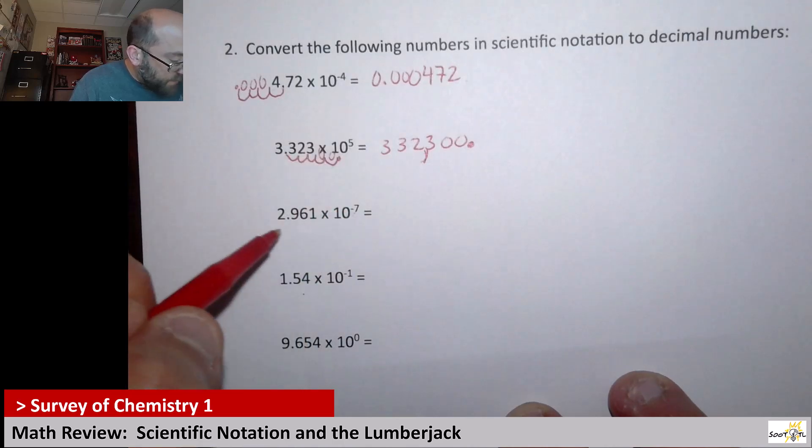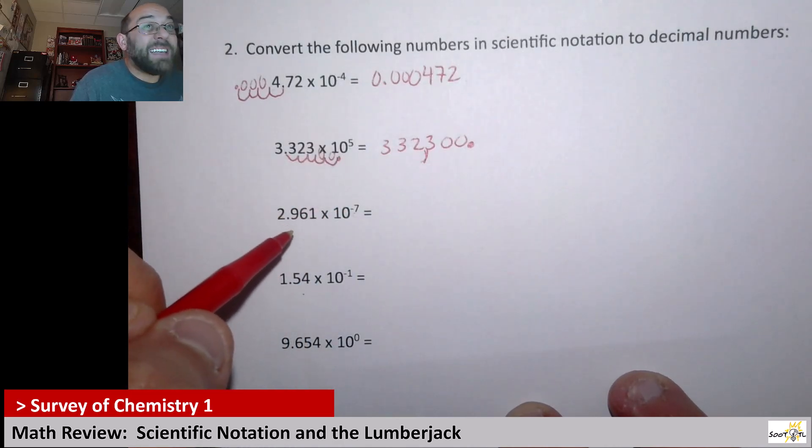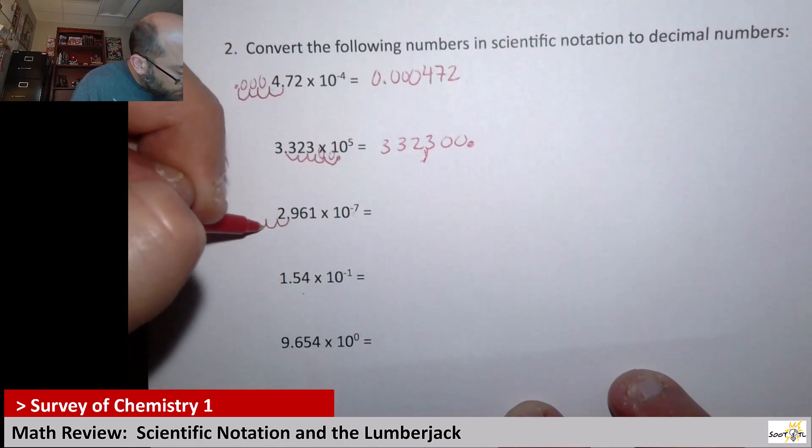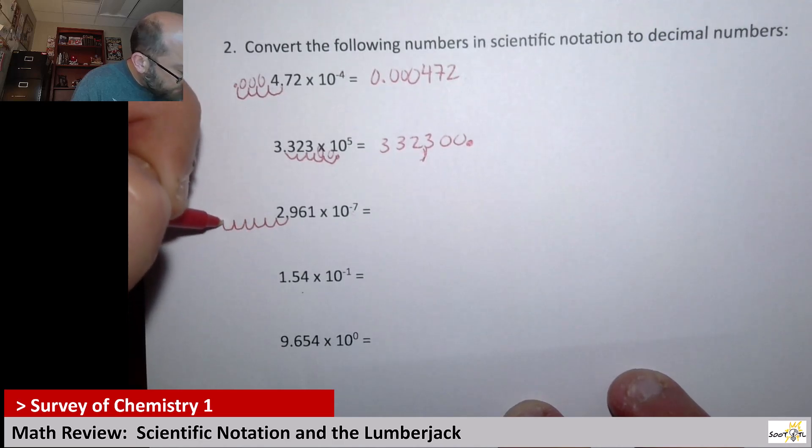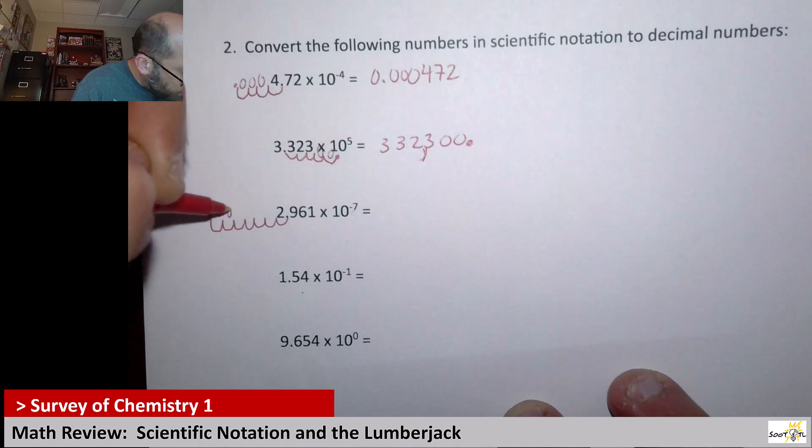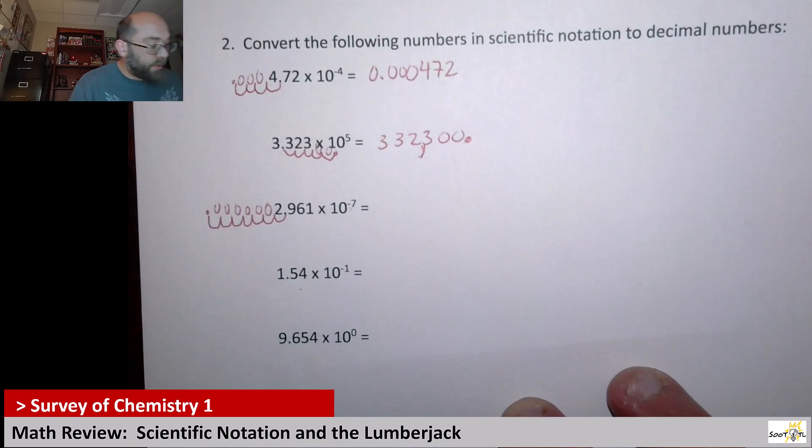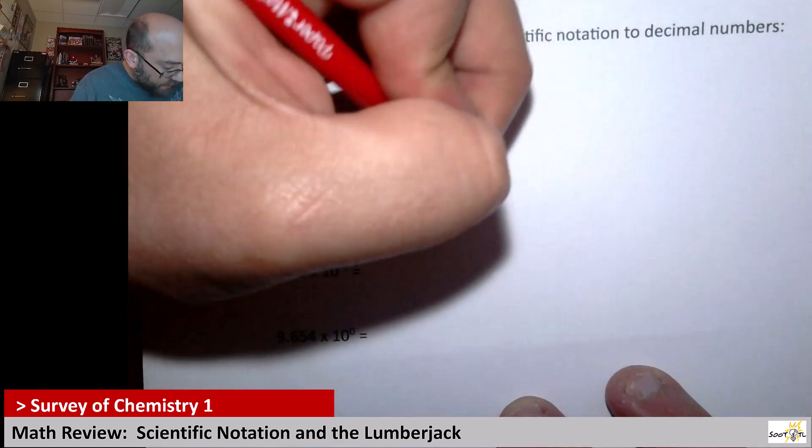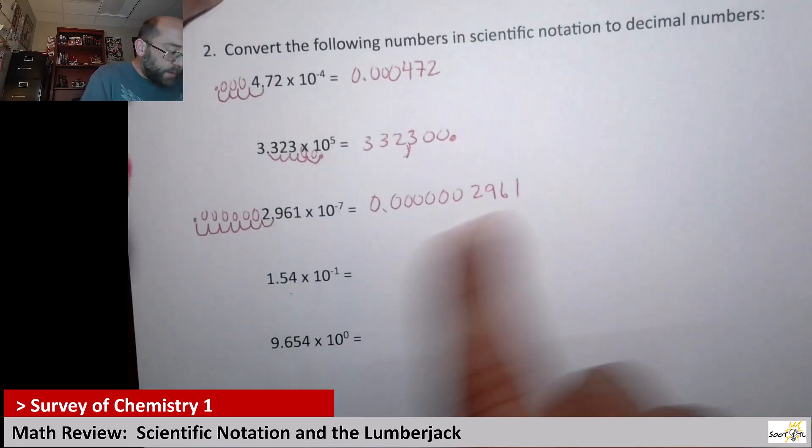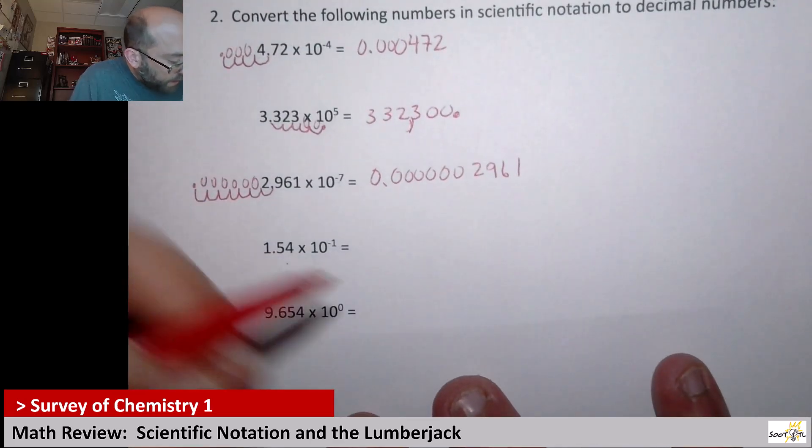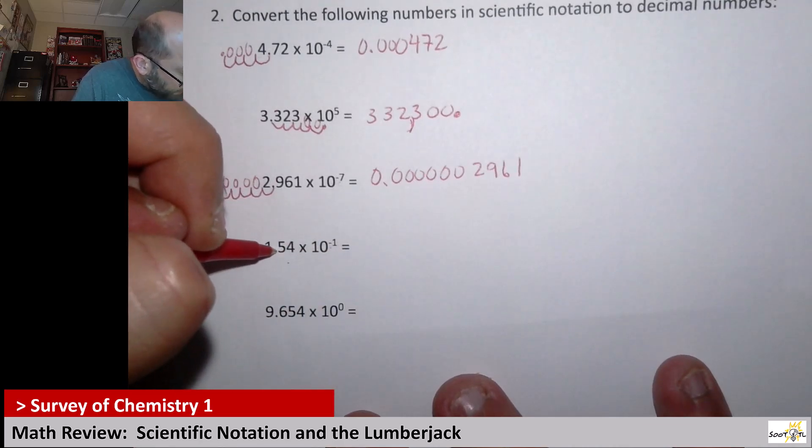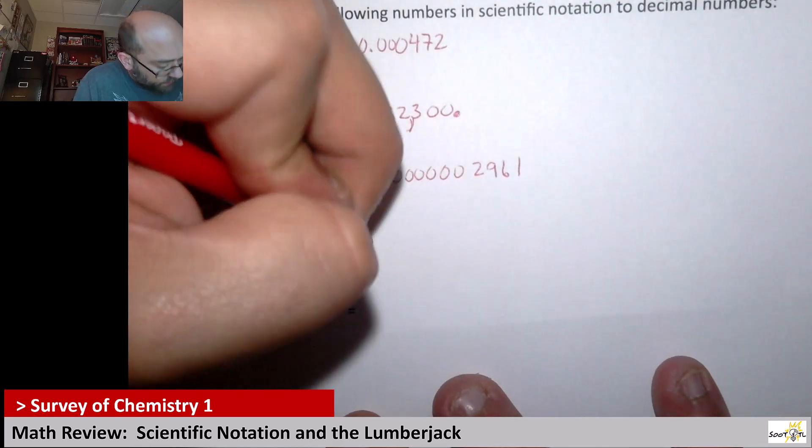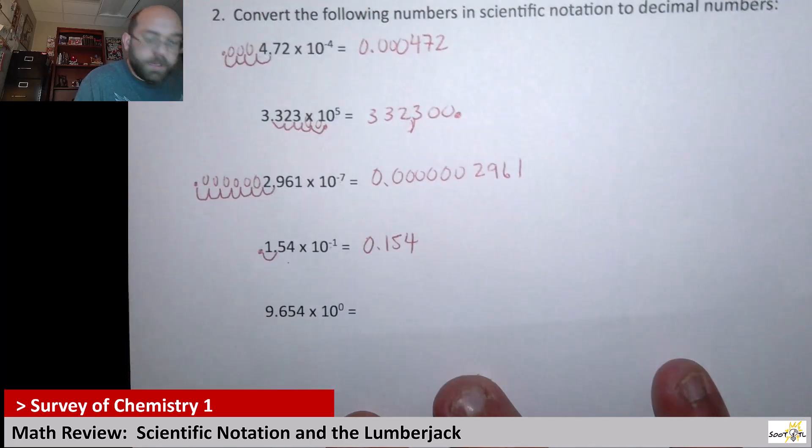Here, this is negative 7. So this number as a decimal should be way, way tiny. Way smaller than 1. So let's go 1, 2, 3, 4, 5, 6, 7. So I'm going to have 1, 2, 3, 4, 5, 6 zeros in front of that 2. So 0.0000002961. So there's my decimal conversion. Next up this is times 10 to the negative 1. So I'm only going to have to go this direction in one spot. So there won't be any zeros in front of the 1. So 0.154. That one was a lot easier.